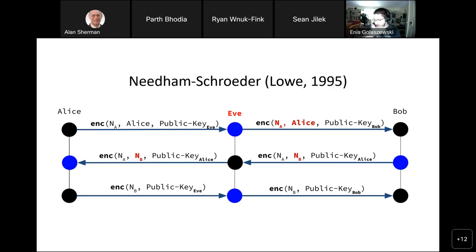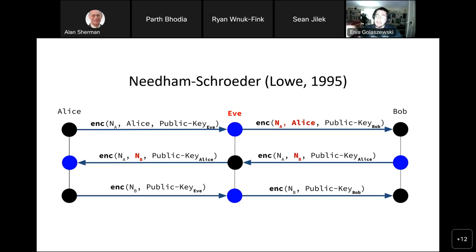Bob generates his own nonce. At this point Bob has effectively accepted Alice's challenge because the message was encrypted for Bob — but Alice didn't encrypt it; Eve did. Bob follows the protocol sensing nothing is wrong: he generates his own nonce, takes both nonces and encrypts them with Alice's public key. Eve now has a problem because she doesn't have Alice's private key. But Eve has concurrent instance P running.